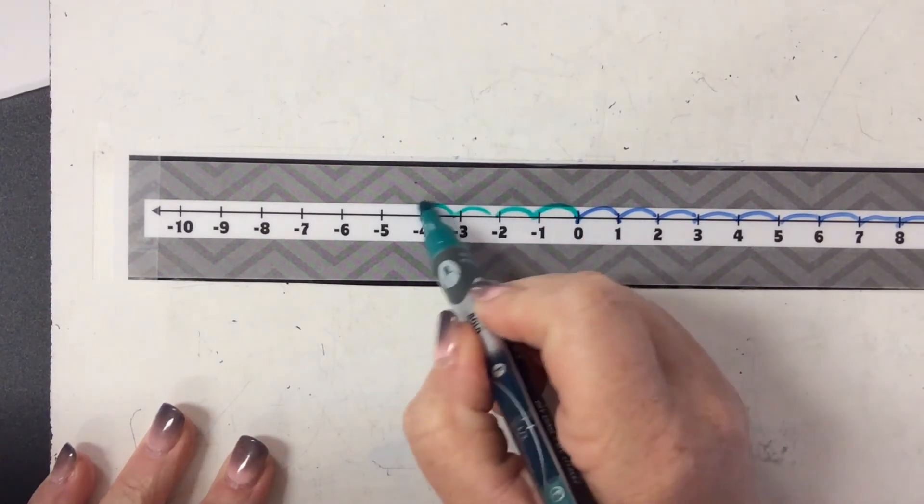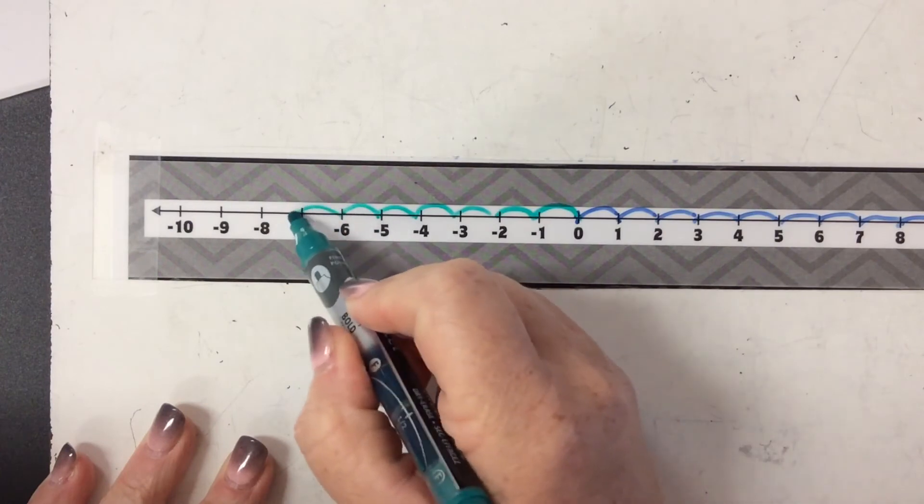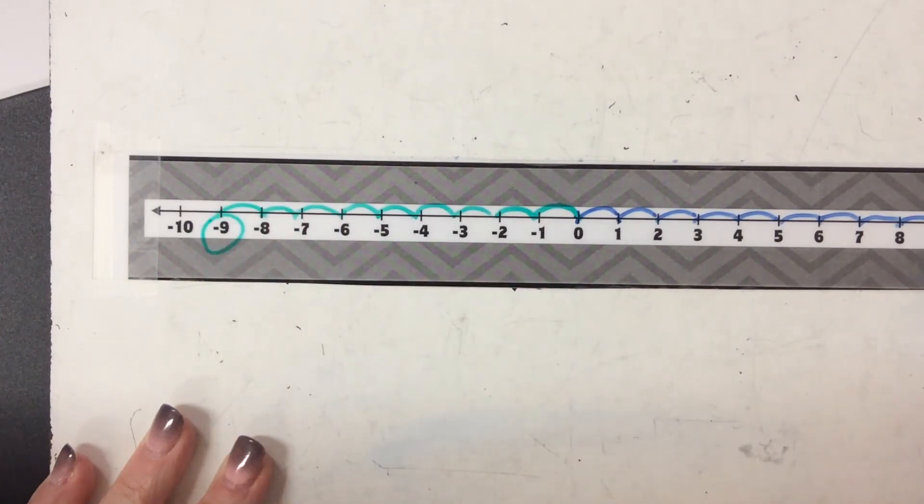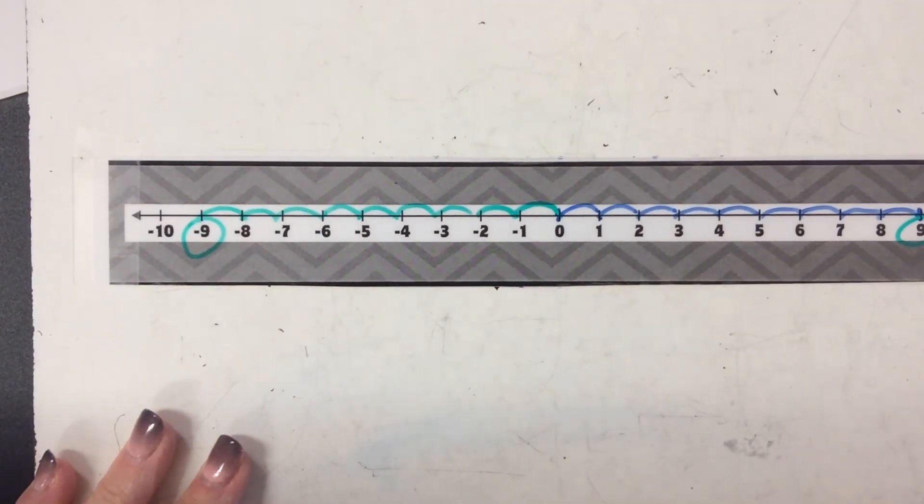I'm going to go nine spaces: 1, 2, 3, 4, 5, 6, 7, 8, 9. Now opposites are pretty simple because...